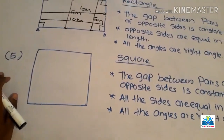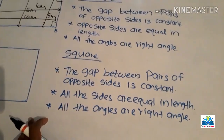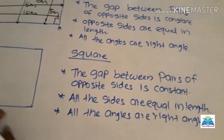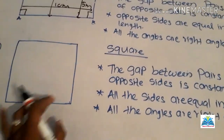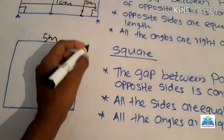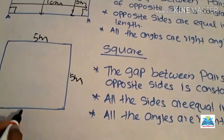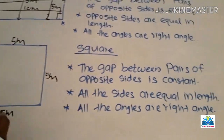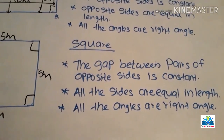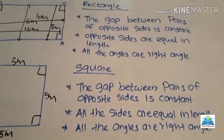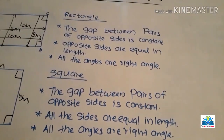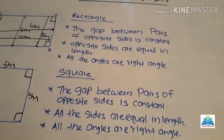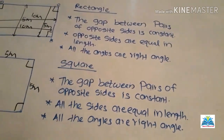The last one, number five, is a square. In a square, the gap between each pair of opposite sides is constant. All four sides are equal in length — if one side is five meters, all sides are five meters. The angles are also right angles. These are the properties of the rectilinear plane figures.